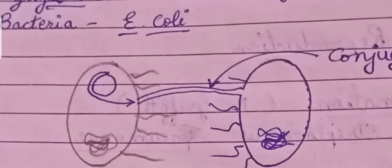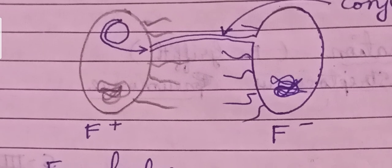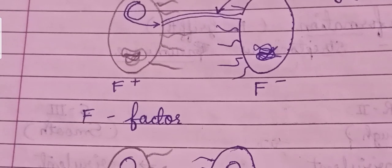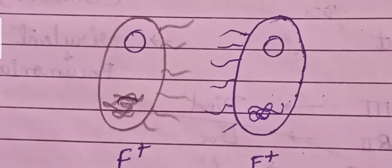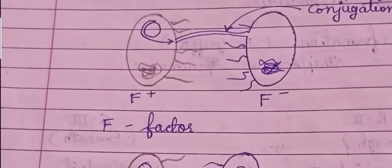During conjugation, the F+ donor bacterium transfers its plasmid through a conjugation tube to the F- recipient bacterium. After conjugation, the F- bacterium also becomes F+, because the plasmid has been transferred. After conjugation, both bacteria are now F+.